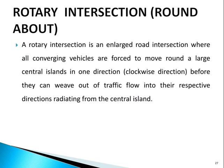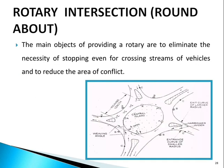A rotary intersection is an enlarged road intersection where all converging vehicles are forced to move around a large central island in one direction (clockwise) before they can exit into their respective directions radiating from the central island. The main objectives are to eliminate the necessity of stopping even for crossing streams and to reduce the area of conflict.